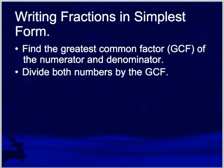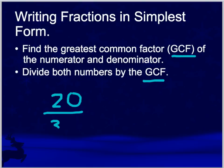Here's the method of writing fractions in simplest form: find the greatest common factor of the numerator and denominator, then divide both numbers by that GCF, or greatest common factor. If I had the fraction twenty-thirtieths, I'd list out the factors of twenty as one, two, four, five, and ten.